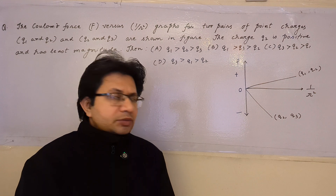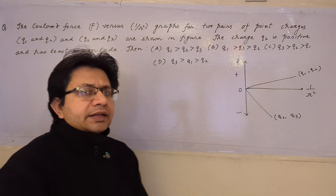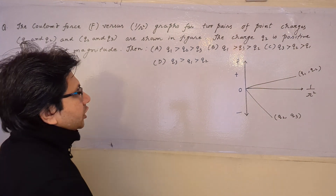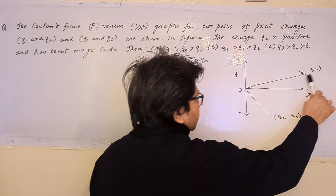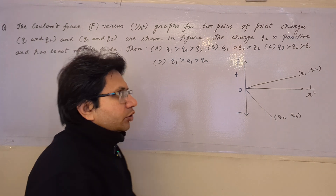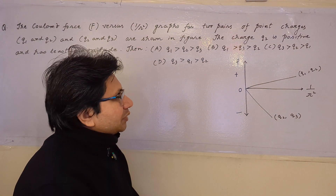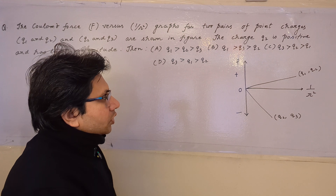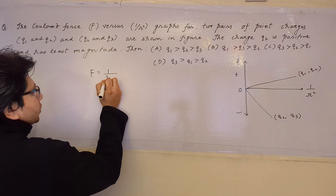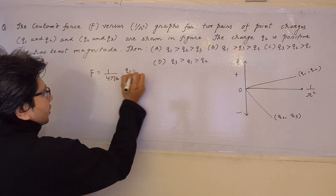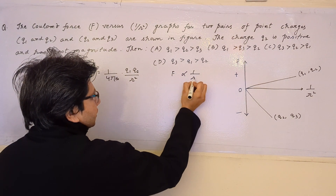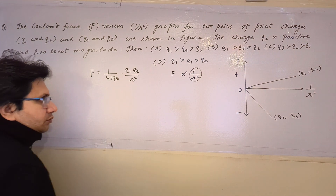This problem involves Coulomb's law and basic mathematical concepts of straight lines and slope. There are two pairs of charges: q1 & q2 and q2 & q3. The formula for Coulomb's law is F = (1/4πε₀) · q1q2/r². From this formula, F is directly proportional to 1/r², so the graph between F and 1/r² is a straight line.